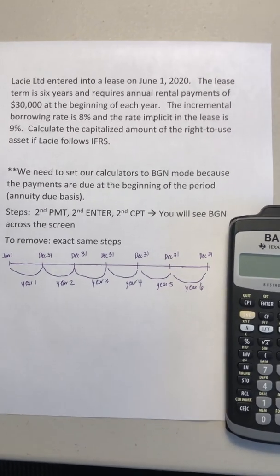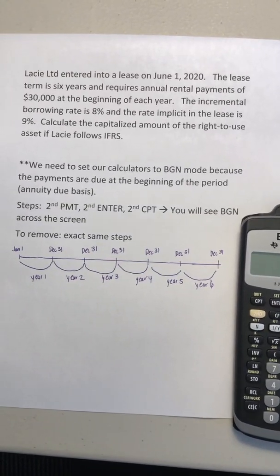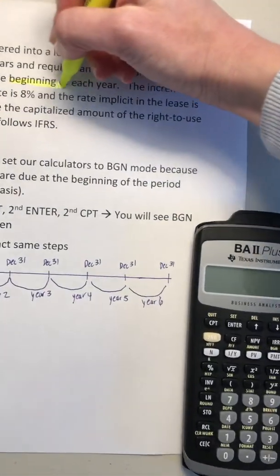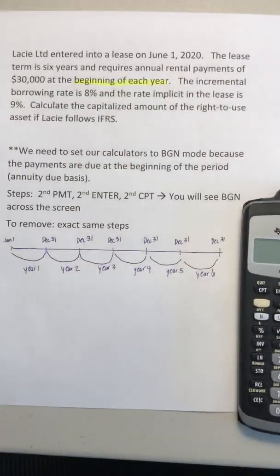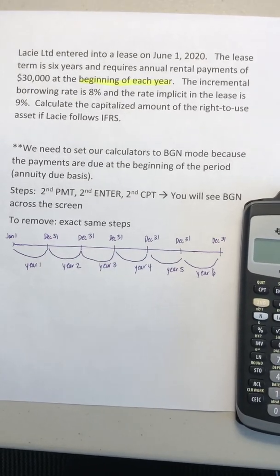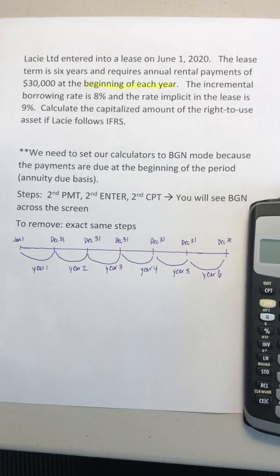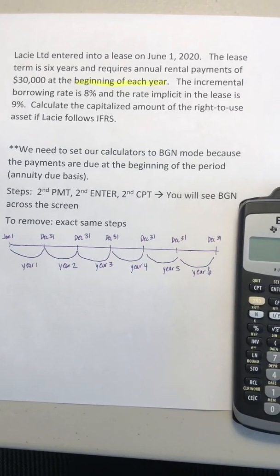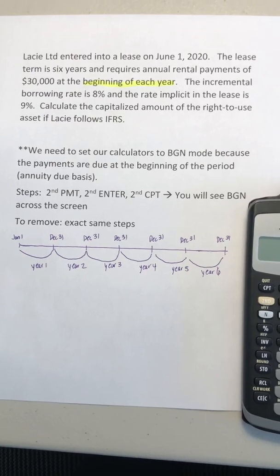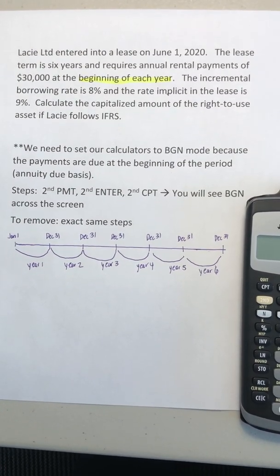There's a really important concept in this question, and it's true of all rent or lease payments — the fact that they're due at the beginning of the year. This means that we need to use our financial calculators differently. How do our financial calculators know if the lease payment is due at the beginning of the period or at the end of the period, like we saw for bonds where the payments are due at the end of each period?